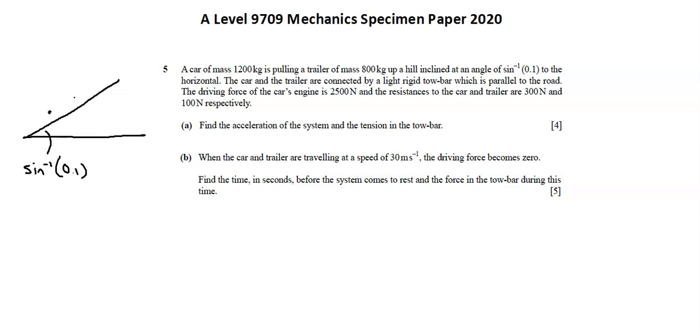I have the trailer and I have the car. Car is 1200 kilograms. Trailer is 800 kilograms. We have our bar in between. There's a driving force up the plane of 2,500 newtons. Car's resistance is down the plane at 300 newtons. The trailer's resistance is down the plane at 100 newtons.